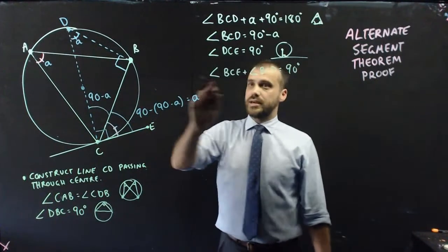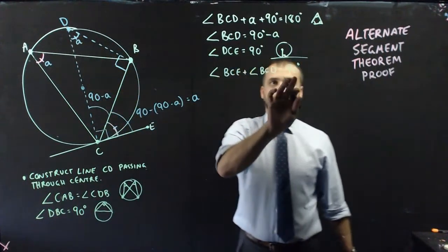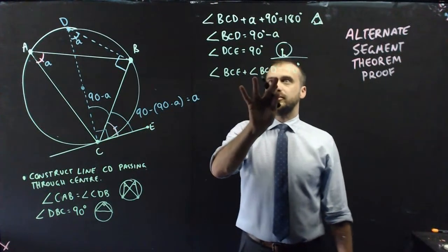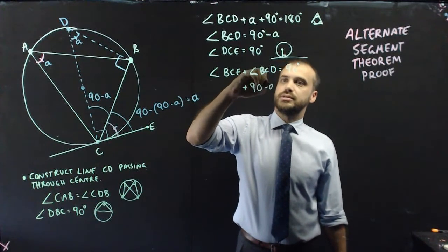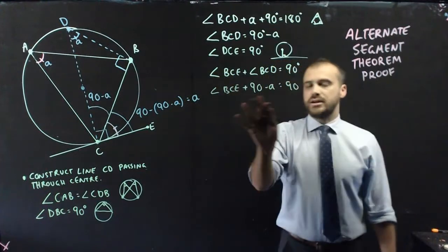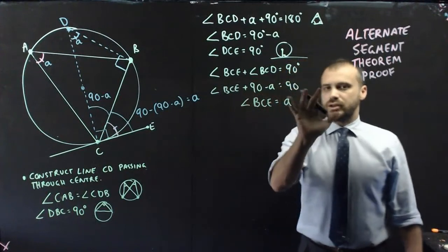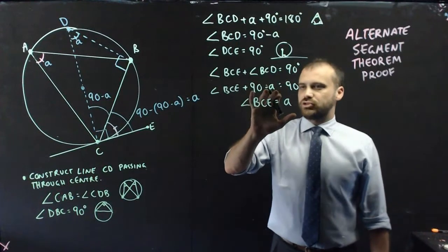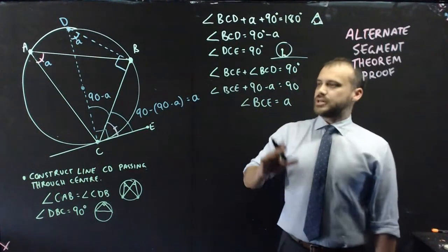Now, a way to do this would be to say that angle BCE plus angle BCD is equal to 90 degrees because that's our 90 degree angle there. We already know that angle BCD is equal to 90 minus A. And I can rearrange that now to find out what angle BCE is equal to. And it doesn't take a lot to figure out that moving our 90 from this side to this side or subtracting 90 from both sides, we get rid of our 90, and adding A to both sides, we get angle BCE equals A.